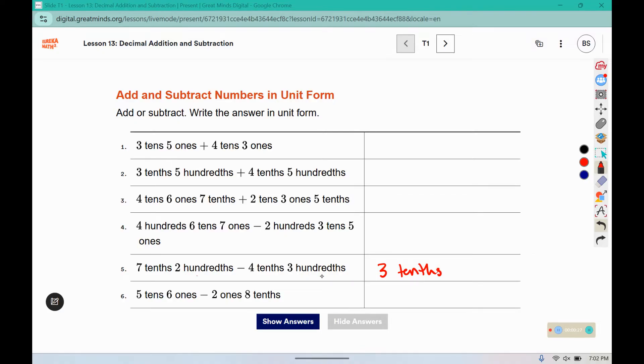But if we do 2 hundredths minus 3 hundredths, we're going to have to take away from those tenths. So it's going to turn into 2 tenths. And then we're going to have 12 hundredths minus 3 hundredths, which would be 9 hundredths.